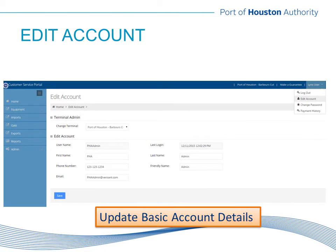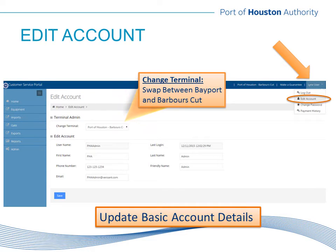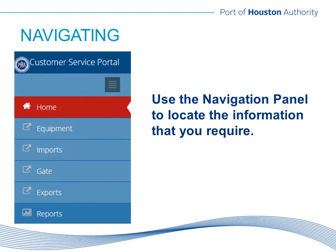On the far right of the Links screen, there is a drop-down menu available for each user titled Links User. By clicking this drop-down menu, you will have options to log out of Links, edit your account, or change your password. The edit account option opens the screen with your registration information — you are able to update your email address, phone number, or name tied to your account. The most widely used section of this page is called Change Terminal, where a user can swap between the two container terminals, Bayport or Barber's Cut. The current view will be listed at the top of the Links screen. The main navigation panel for Links queries is on the left side of the screen — these are categories listed for each set of queries and actions that a user might require.